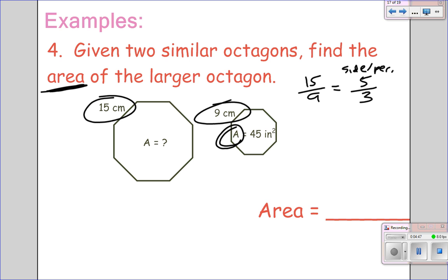Now, you're being given the area. So, I don't need the side perimeter ratio to find the area. I need the area ratio, which is going to equal 5 squared over 3 squared, which is 25 over 9. So, 25 over 9 equals, let's see, the bigger area is x over 45.